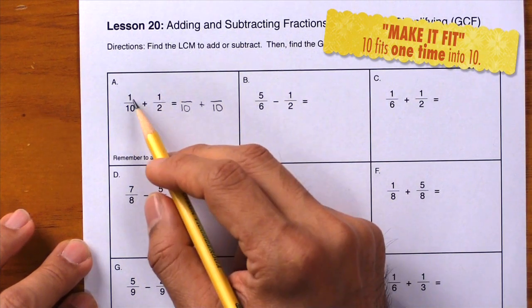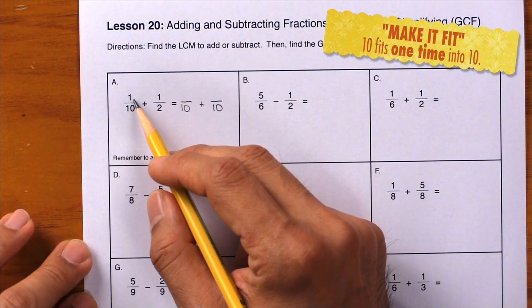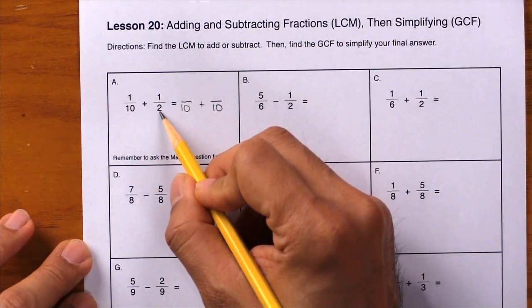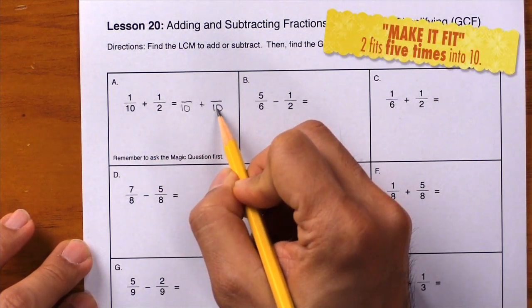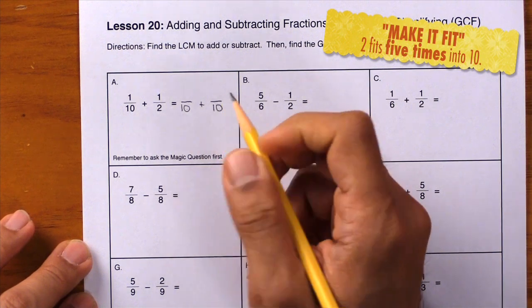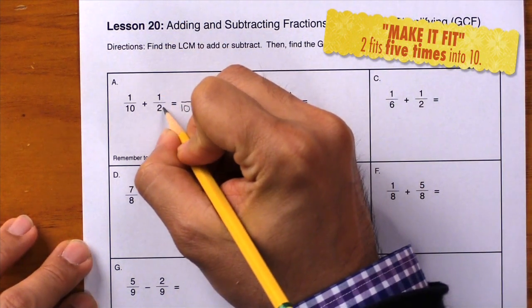Now how did we get from 10 to 10? We actually didn't need to do anything there, so we're going to leave it alone and the 1 up here we're going to leave that alone as well. How did we go from 2 to 10? We did that by multiplying by 5, so multiply by 5, multiply by 5.